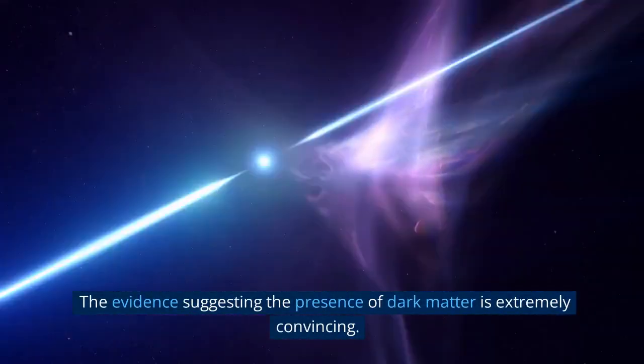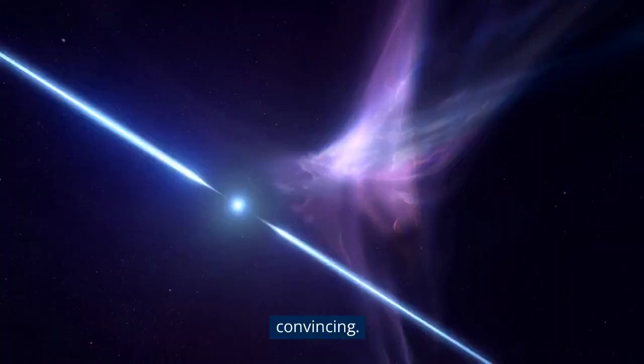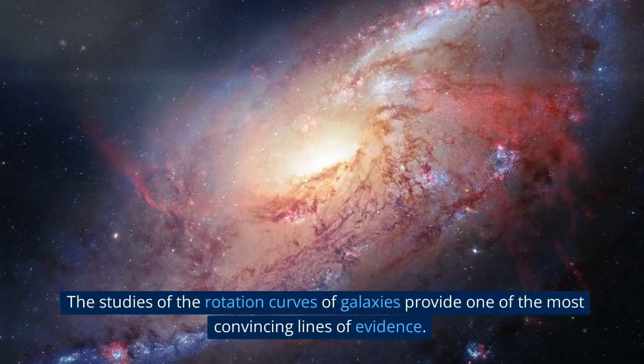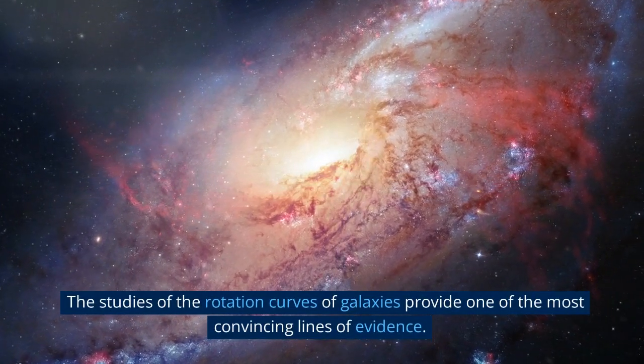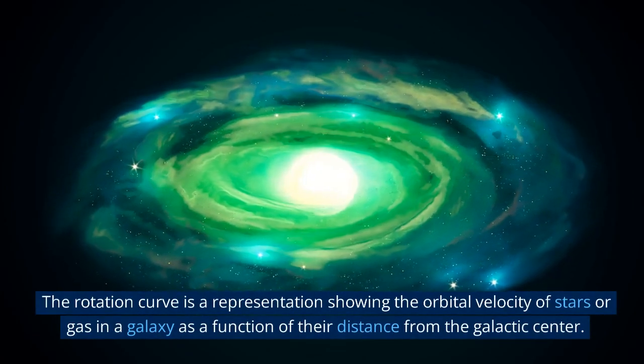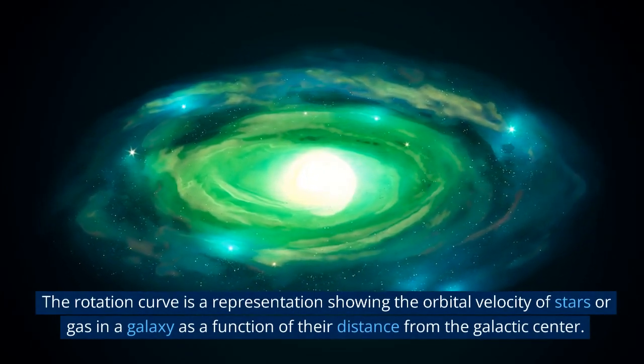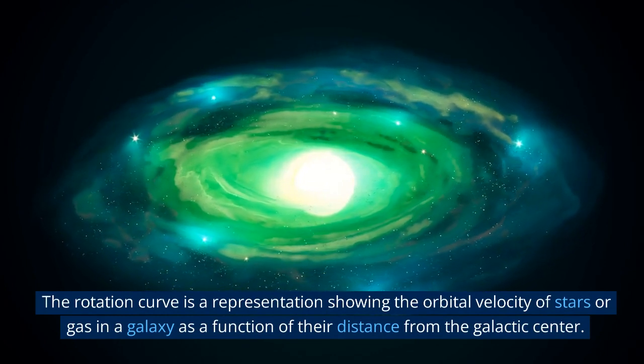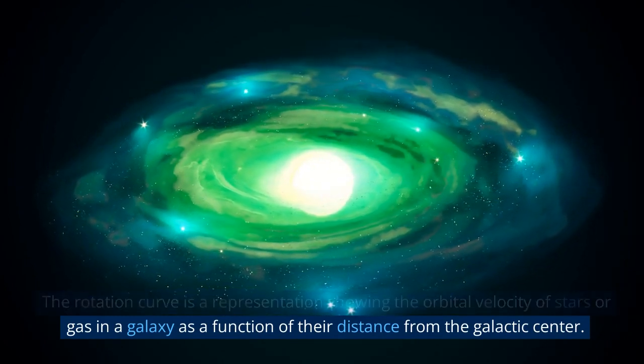The evidence suggesting the presence of dark matter is extremely convincing. The studies of the rotation curves of galaxies provide one of the most convincing lines of evidence. The rotation curve is a representation showing the orbital velocity of stars or gas in a galaxy as a function of their distance from the galactic center.